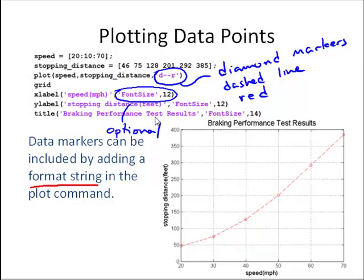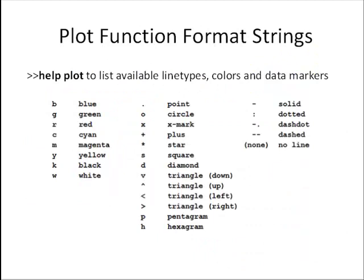So let's talk more about that formatting string. You might wonder, well, how do we know all the different options that MATLAB has for formatting? We can type help plot in the command window and along with all the other information about the plot function, it will give you a table that lists available line types, colors, and data markers. So we have all these different colors, different data markers, and different line types.